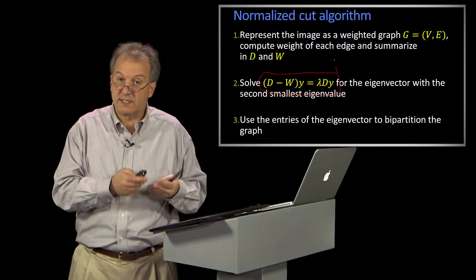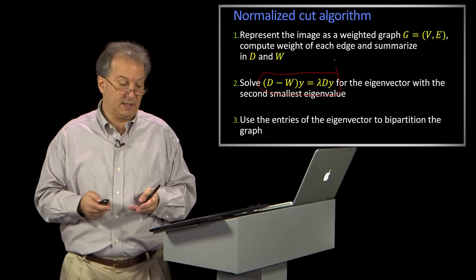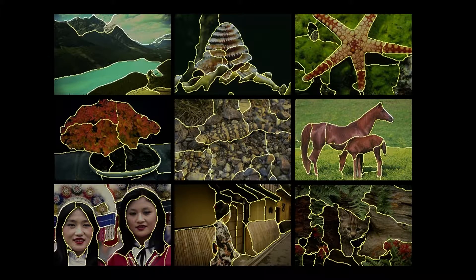So let me just show you some of the results that you can get using that. Here are results taken from the Berkeley database, because Shi and Malik did normalized cuts. And you can see that there are some pretty good results here — especially this one here where it breaks up the picture of the people in a particular way.